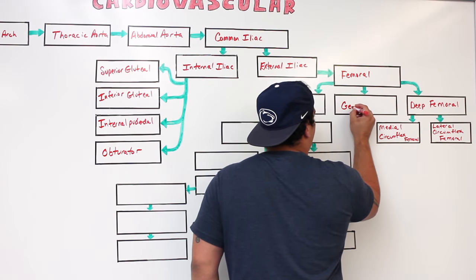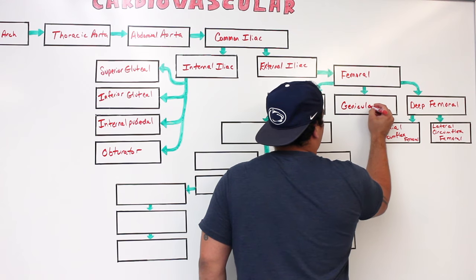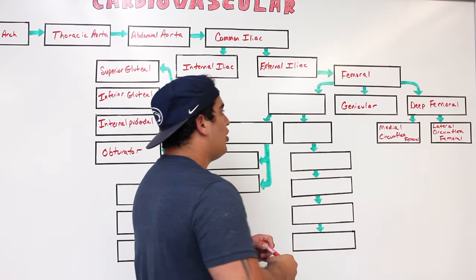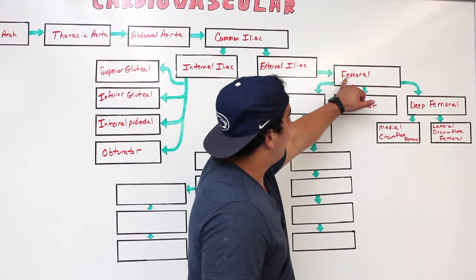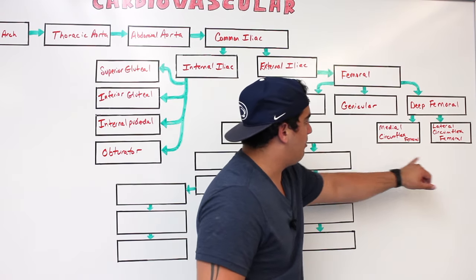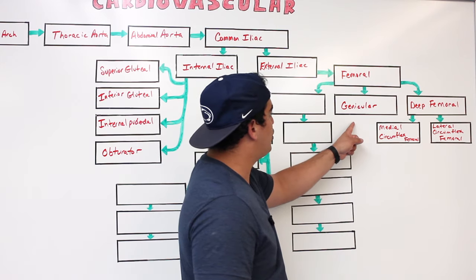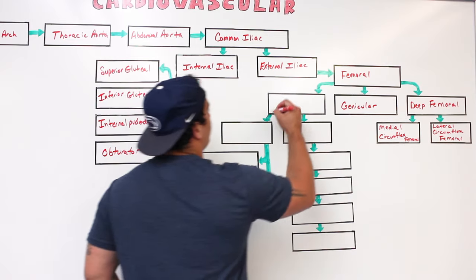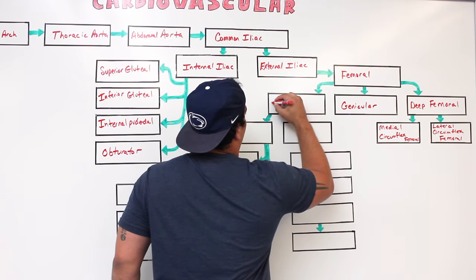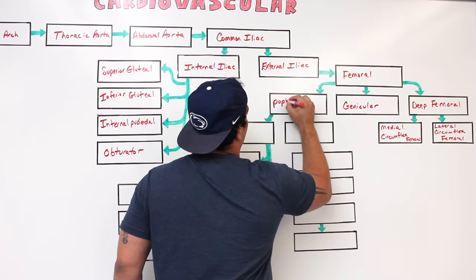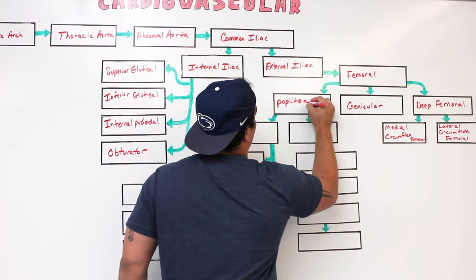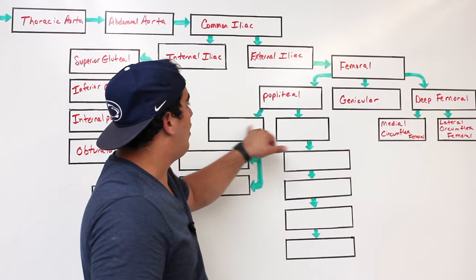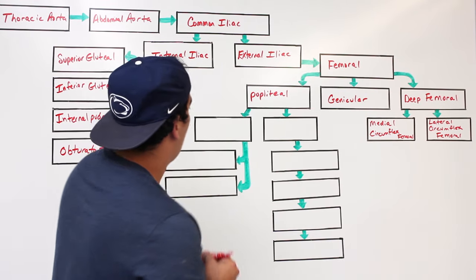The femoral artery also gives off genicular branches, which supply various muscles within the thigh. Then the femoral continues through what's called the adductor hiatus and gives off the popliteal artery.